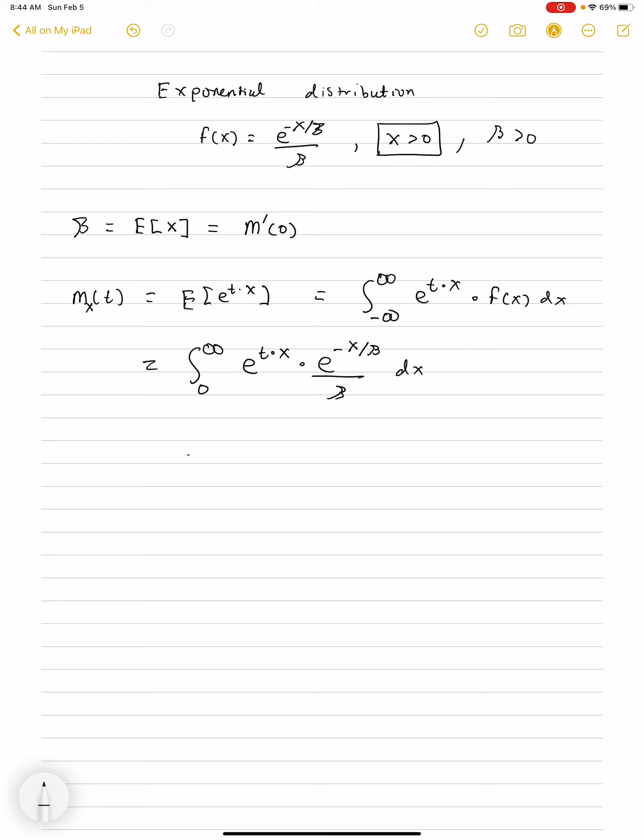Now, you might be saying this is an improper integral from minus infinity to infinity. But remember, the density function only applies for x greater than 0. Otherwise, the density is 0. Hence, we integrate from 0 to infinity.